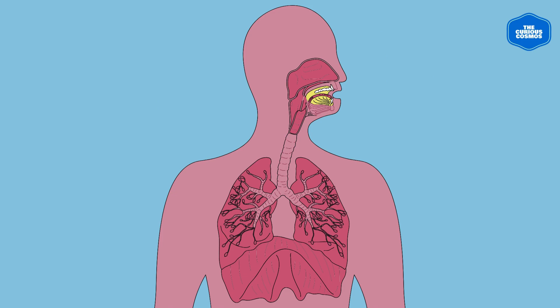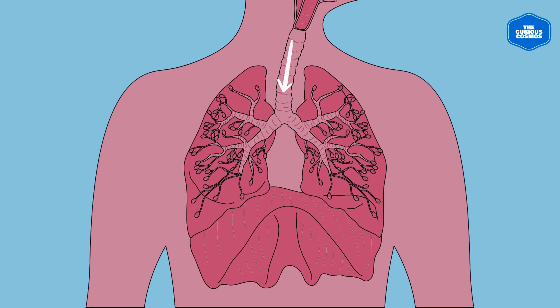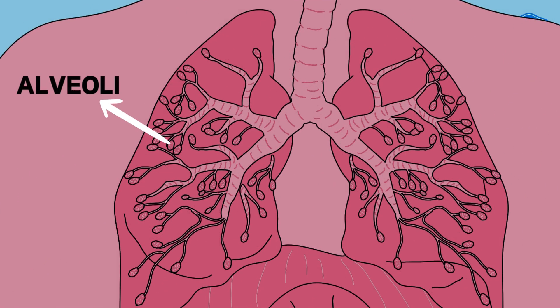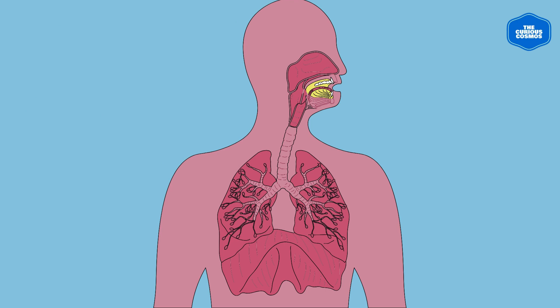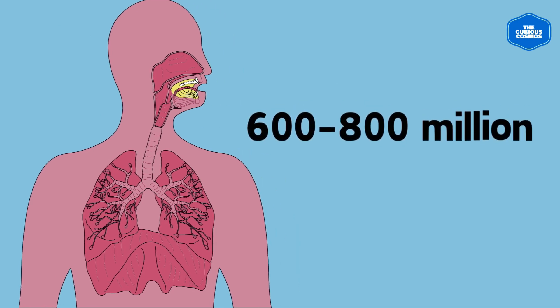Every time you breathe in, air takes a specific journey through your respiratory system to reach the alveoli — the tiny air sacs responsible for gas exchange. There are 600 to 800 million alveoli in the two lungs of a human being.